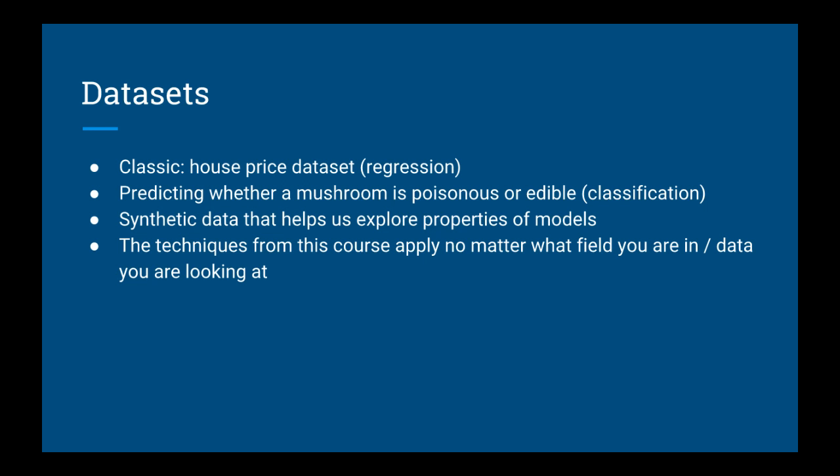The first data set is a classic — it's called the housing price data set, and the goal is to predict the price of a house given some attributes like number of rooms, neighborhood, and so on. The second data set is to try and predict whether a mushroom is poisonous or edible, given some attributes like size, shape, and color of the mushroom. Of course, any of these techniques can be used no matter what field you are in, whether that be finance, biology, or online advertising. The great thing about machine learning is that it doesn't matter what field you're in, the algorithms stay the same. I'll see you in the next lecture.